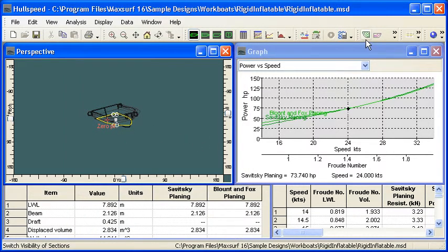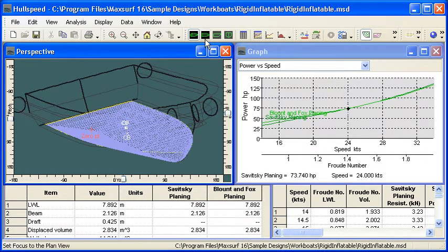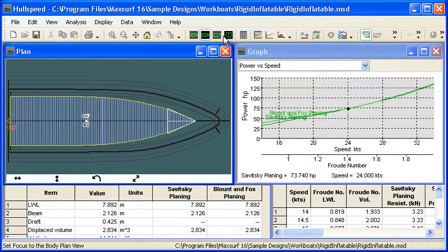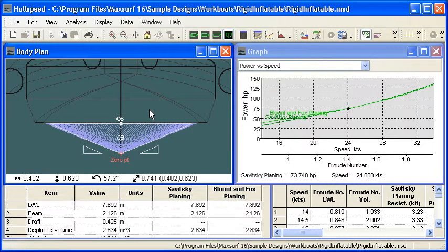If we turn on our sections and then we zoom in, we can see that Hull Speed has automatically measured the underwater shape. And we can see the shape of the sections that have been measured off the design, and it's those sections that will be used for the resistance calculations.